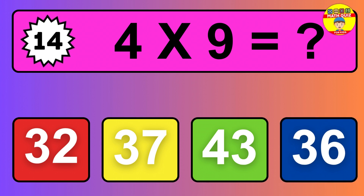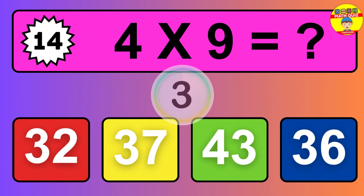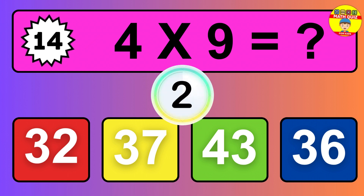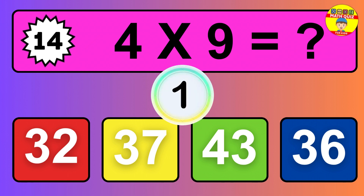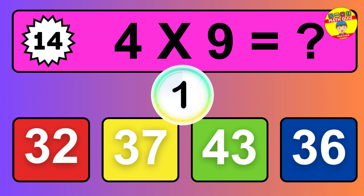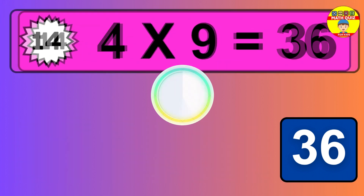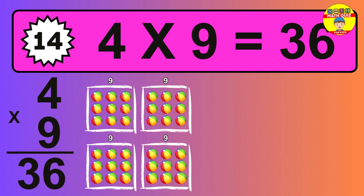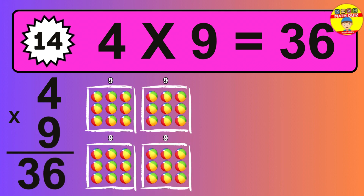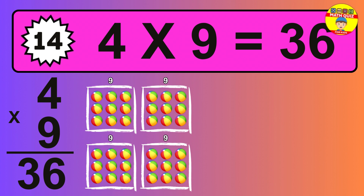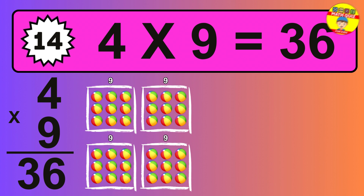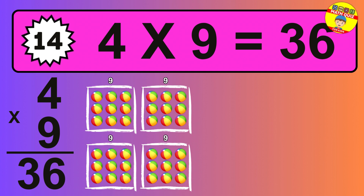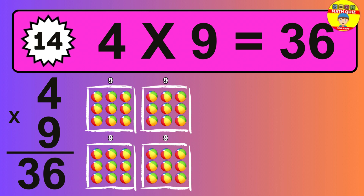Question fourteen. Four times nine equals what? So the answer is four times nine is 36. To calculate, we have four groups with nine balls each one. So how many balls do we have? 36 balls.